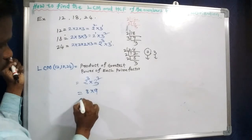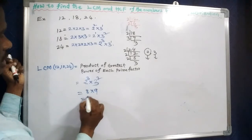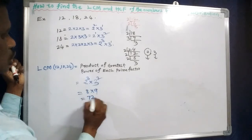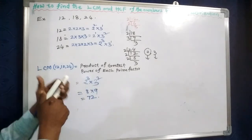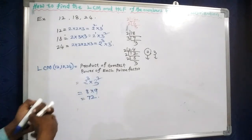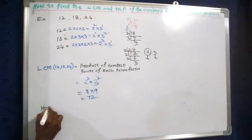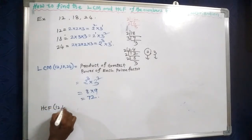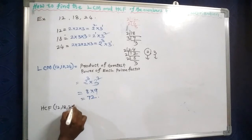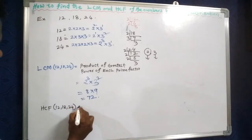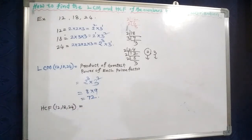So 2 cubed is 8 and 3 squared is 9, giving us 8 into 9 equals 72. Therefore, the LCM is 72. Next, HCF of 12, 18, and 24.